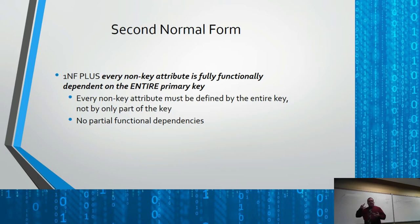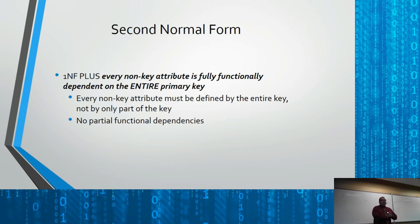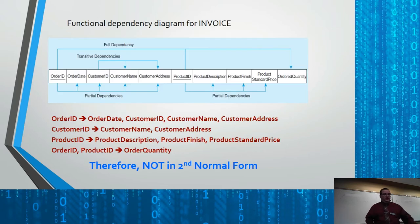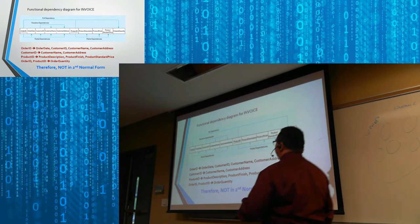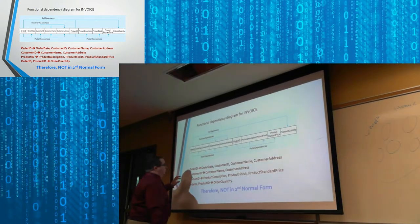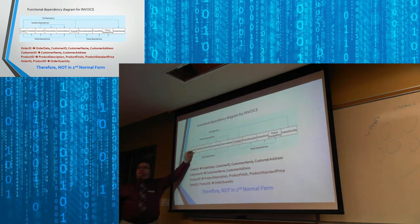The next rule is: every non-key attribute is fully functionally dependent on the entire primary key. That means every non-key attribute must be defined by the entire key, not only part of the key — there are no partial dependencies. Here's how the dependencies work out: the table is in first normal form, but not in second normal form because things aren't dependent properly.